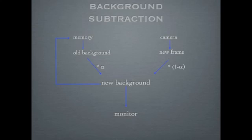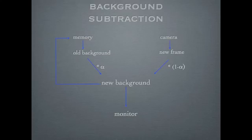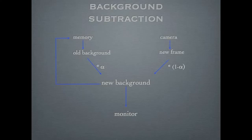This is the algorithm of our background subtraction module. The camera keeps streaming the frames into the FPGA board where they are processed, stored into memory and displayed on the monitor. Every time there's a new frame coming in, this module reads the previous processed background and multiplies it by a factor alpha, then adds the new frame multiplied by 1 minus alpha. Alpha is in between 0 and 1. It's a factor that manipulates how long it takes for a new object to become a part of the background. After calculation, the new background is stored back to the memory for the next computing, and it's also displayed in the first window on the left of the monitor.